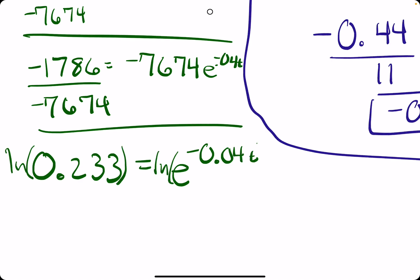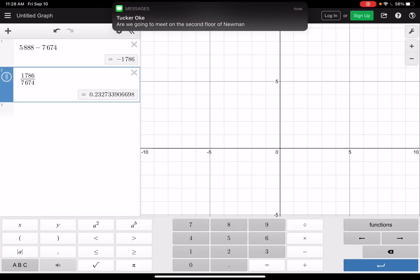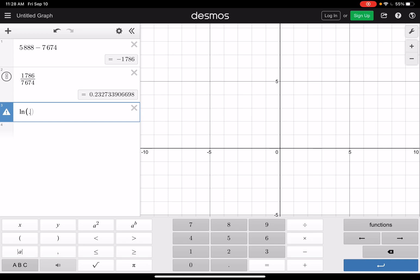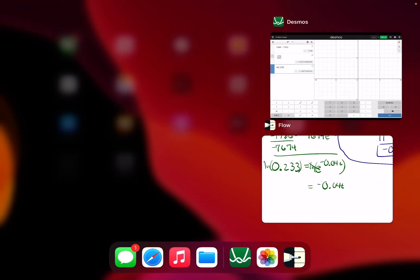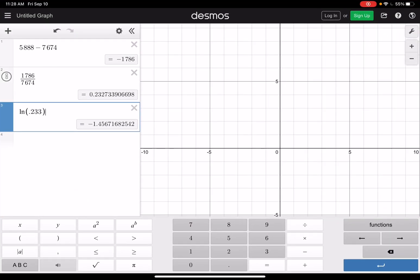We take the natural log of both sides to eliminate the E, leaving us with negative 0.04T equals the LN of 0.233, which is negative 1.457. We divide by negative 0.04 and get 36.4.